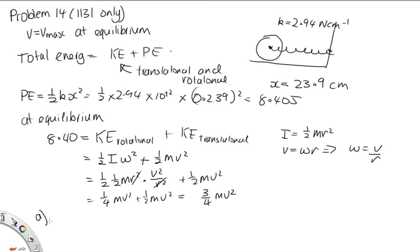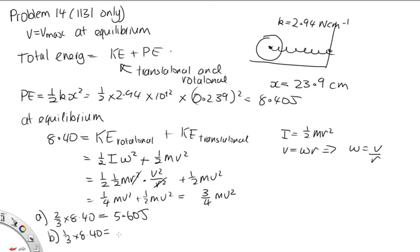Part A: the translational kinetic energy is two-thirds of the total energy = two-thirds × 8.40 = 5.60 J. Part B: the rotational kinetic energy is one-third of the total energy = one-third × 8.40 = 2.80 J.